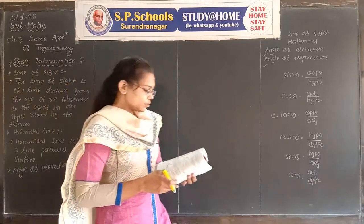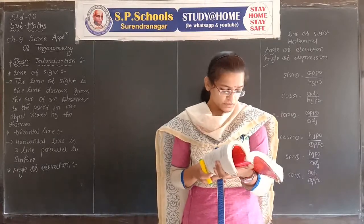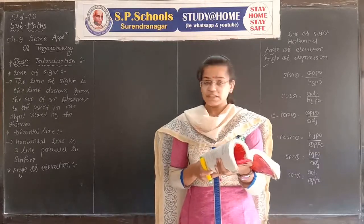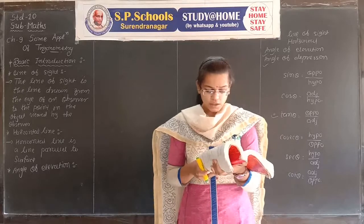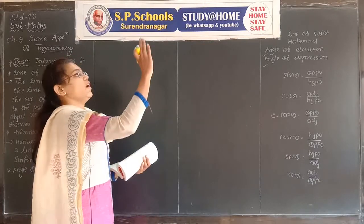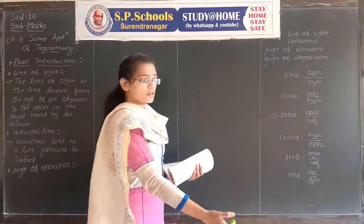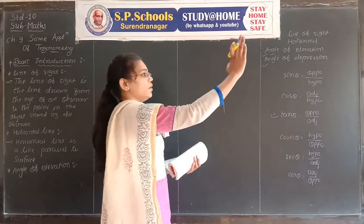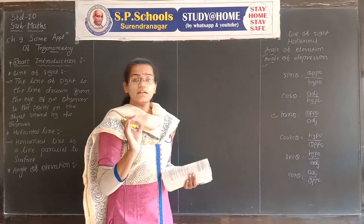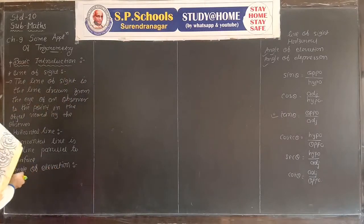See in your textbook on page number 196. The angle of elevation of the point viewed is the angle formed by the line of sight with the horizontal when the point being viewed is above the horizontal level — that is, the case when we raise our head to look at the object. When the object is above the horizontal, one ray from the eye is horizontal — parallel to the surface — and another ray is the line of sight from the eye to the object. The angle between the horizontal and the line of sight is called the angle of elevation.